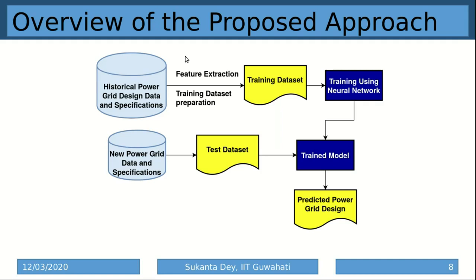Our objective is to reduce the iterative flow of the power planning phase while still satisfying the allowed margin of IR drop and electromigration, with the help of historical data generated in the design process of the power grid network. We use historical power grid data and specifications, perform feature extraction and training data generation, train a neural network, and then predict results for new power grid data.